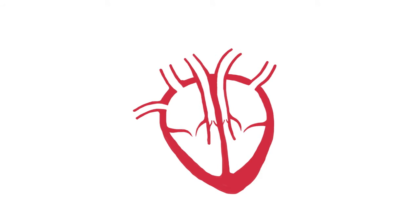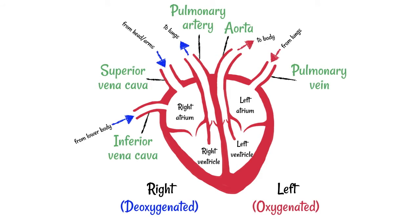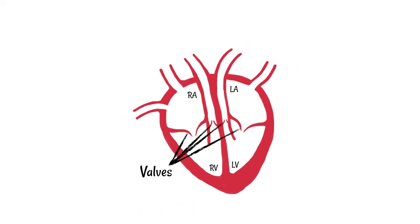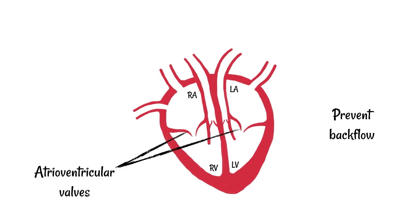It's important that you understand the structure of the heart before you can go into the details of what causes the heartbeat sound. In particular, you need to know that there are four sets of valves, and these valves are there to prevent backflow of blood. The first set are called the atrioventricular valves, named because they are between the atria and the ventricles. The next set are known as the semilunar valves, and these are at the base of the arteries that leave the heart — the pulmonary artery and the aorta.